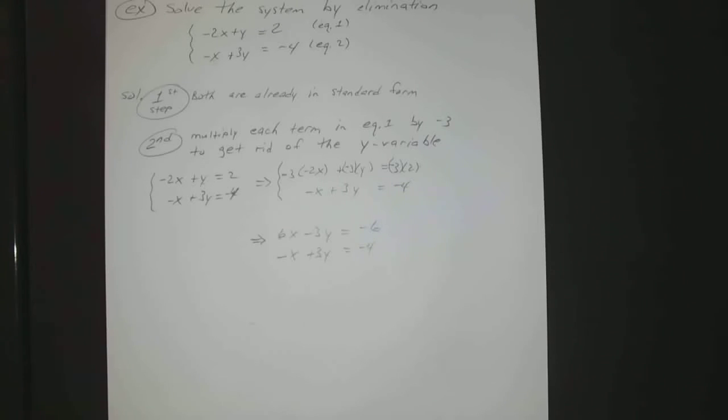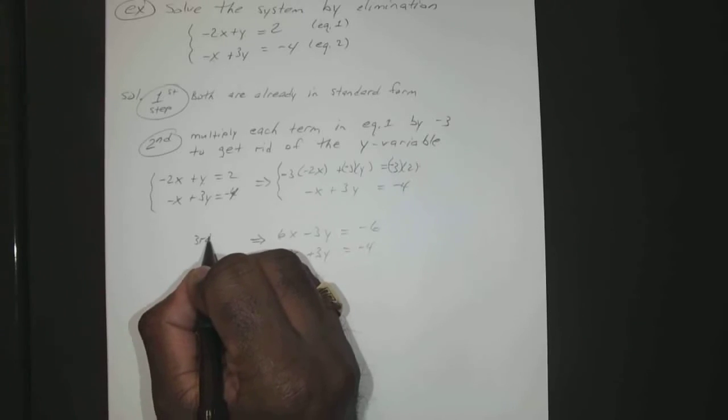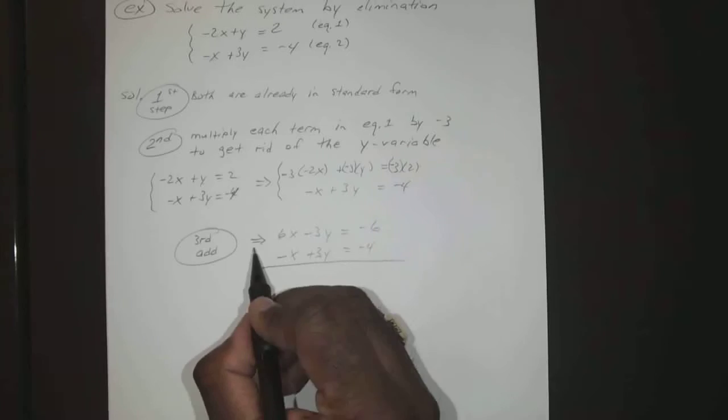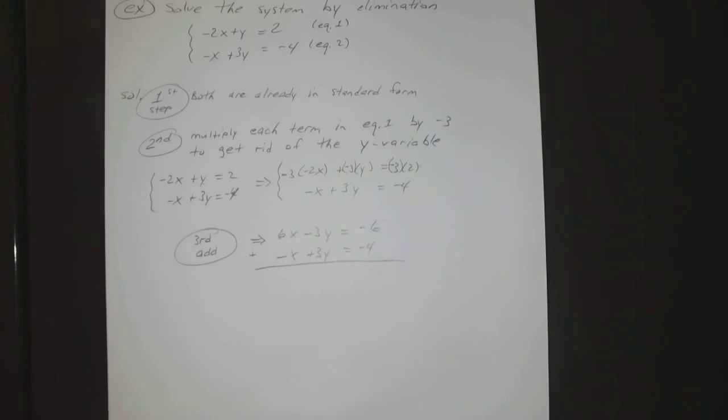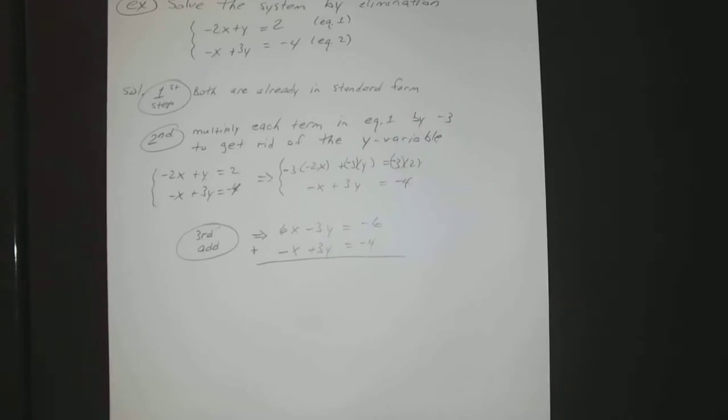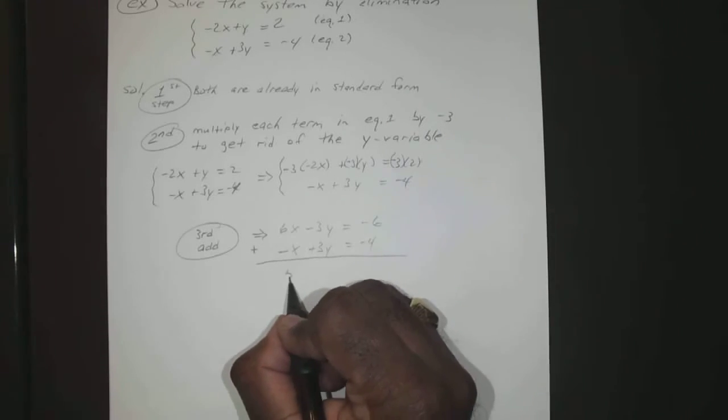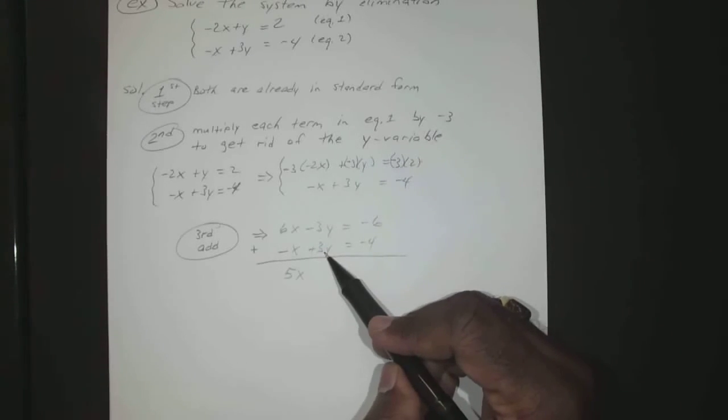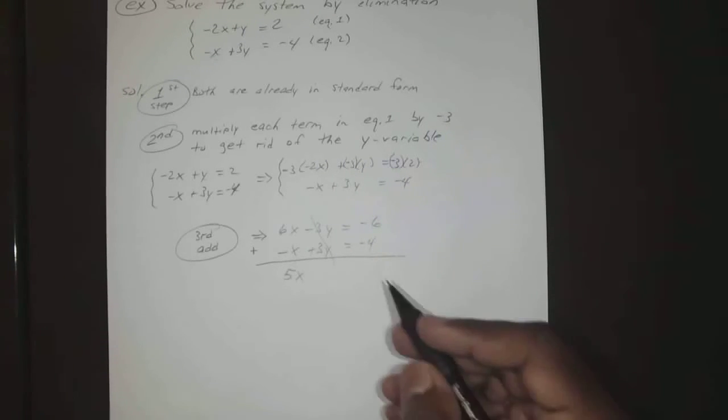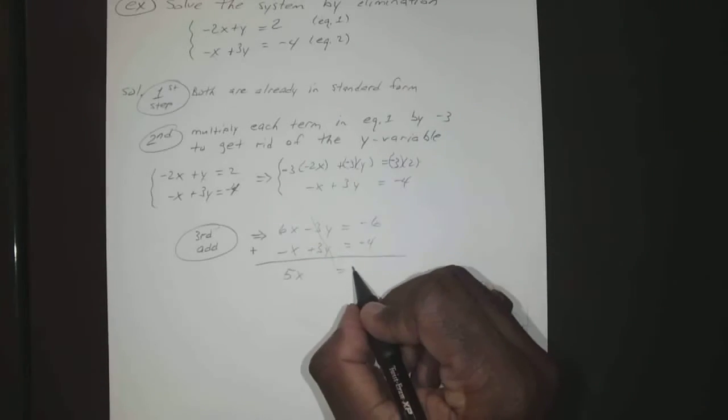Which brings us to step number three, which is we're going to add those two together. Okay, so you have 6x - 1x gives you 5x. -3y + 3y is 0, which is exactly how we planned it. We knew that was going to disappear.